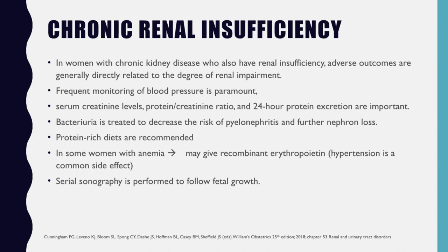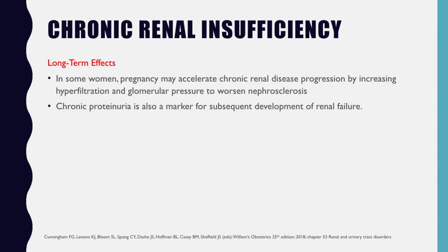In women with chronic kidney disease and renal insufficiency, adverse outcomes are generally directly related to the degree of renal impairment. Frequent monitoring of blood pressure, serum creatinine levels, protein-creatinine ratio, and 24-hour protein excretion are very important. Bacteriuria is treated to decrease the risk of pyelonephritis and further nephron loss. Protein-rich diets are highly recommended. For some women with anemia, recombinant erythropoietin can be given, though hypertension is a common side effect. Serial sonography is performed to follow fetal growth.